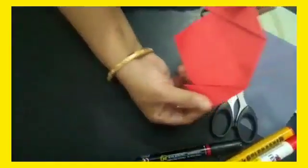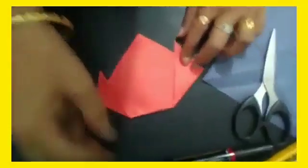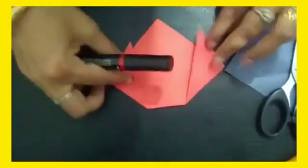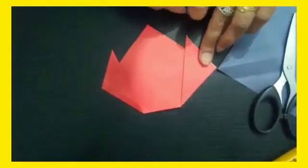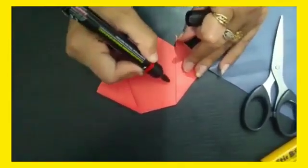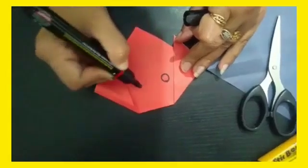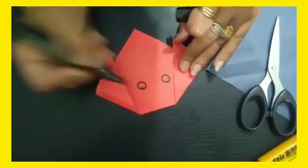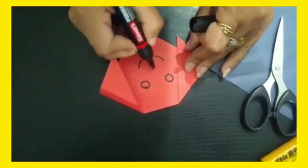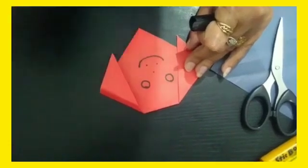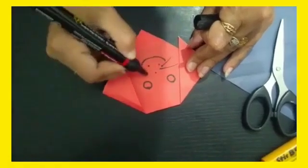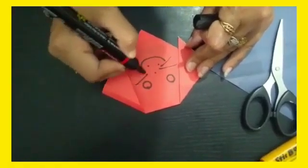It will become this way. Now what you have to make, you have to make puppy's eyes and face. For this you need a marker. Draw two circles and two lines like this.